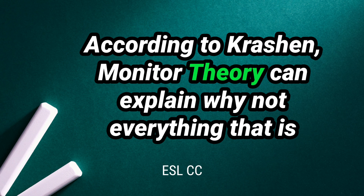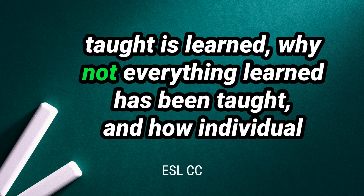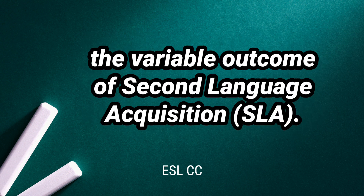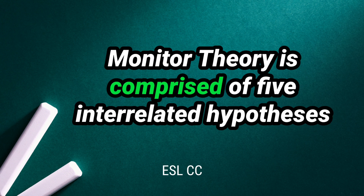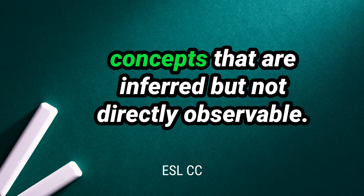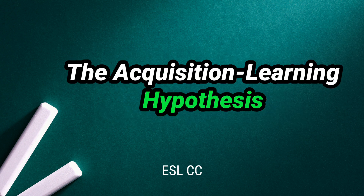According to Krashen, monitor theory can explain why not everything that is taught is learned, why not everything learned has been taught, and how individual differences among learners and learning contexts are related to the variable outcome of second language acquisition. Monitor theory is comprised of five interrelated hypotheses which are based on several important constructs — key concepts that are inferred but not directly observable. The Acquisition-Learning Hypothesis.